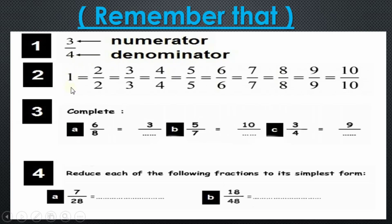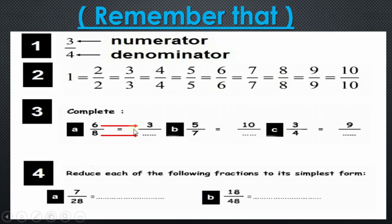The next thing we want to remember is that the whole one equals two over two (two halves), three over three (three thirds), four quarters, five fifths, six over six, seven over seven, eight over eight, nine over nine, ten over ten, and so on.